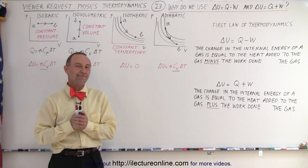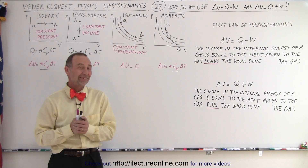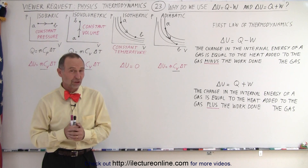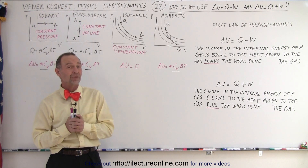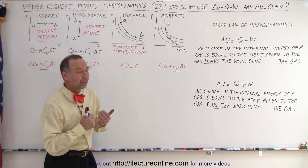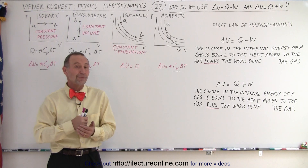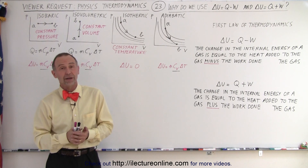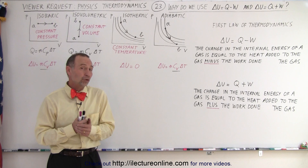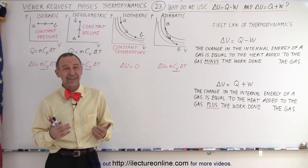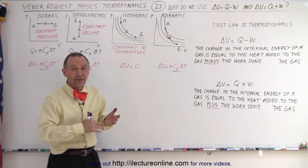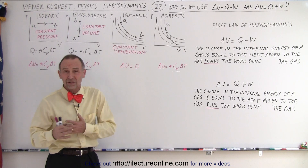Welcome to Electronline. This is probably the most asked question in thermodynamics from the viewers. Why do we sometimes use delta U equals Q minus W? And why does my book say delta U equals Q plus W? It's the source of a lot of confusion. Why is it plus? Why is it minus? Why is it different?